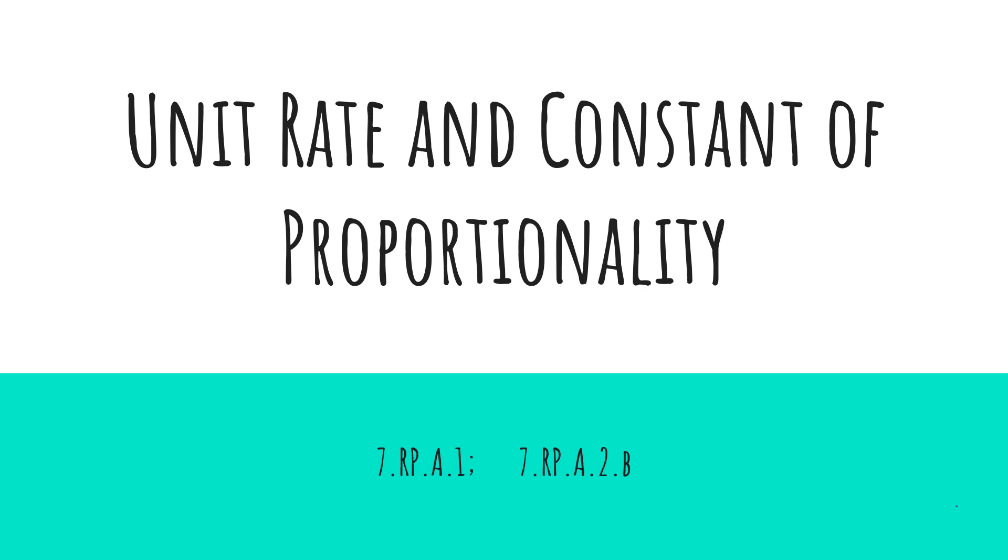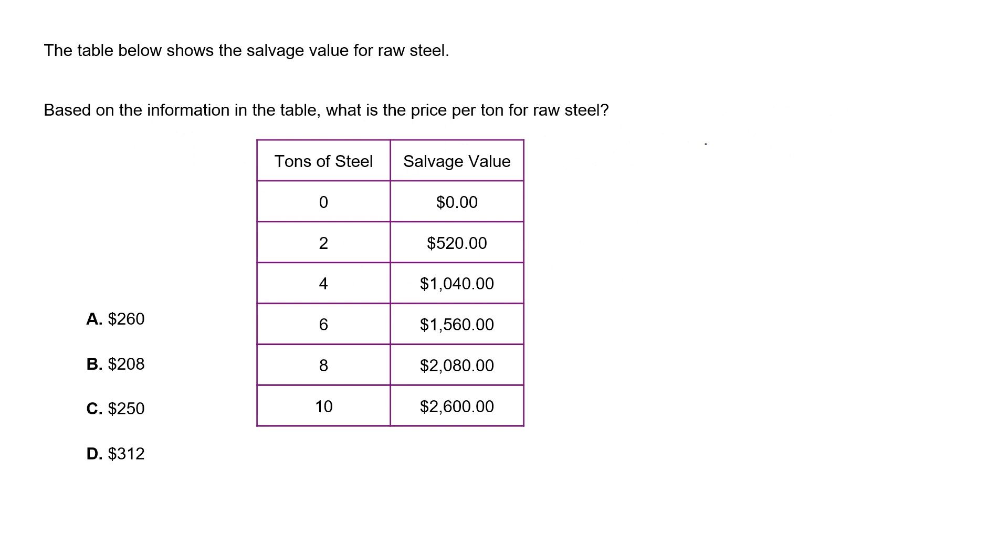Hey, this is Ms. Sebastian, and we're going to look at Study Island topic unit rate and constant of proportionality. The table below shows the salvage value for raw steel. Based on the information in the table, what is the price per ton for raw steel? On the left here, we see the tons of steel. For zero, the salvage value is zero dollars.